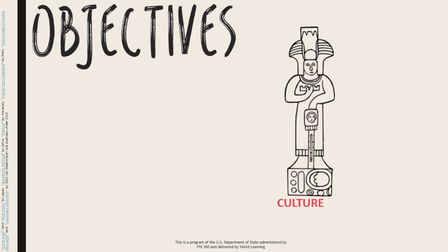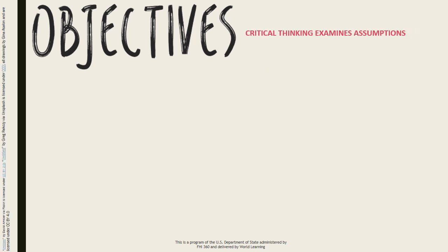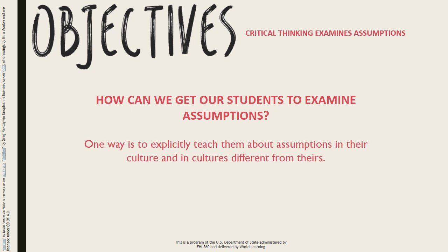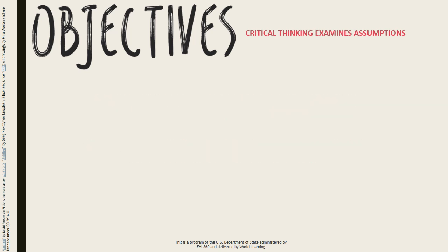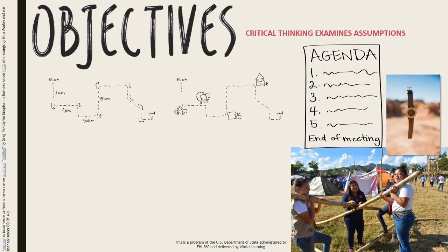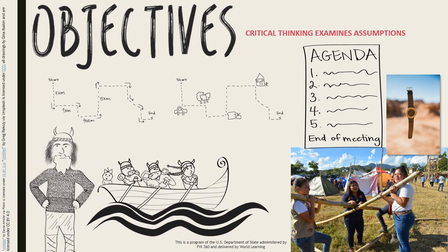Let's review some of the descriptions of critical thinking that we saw in Unit 2 and consider the kinds of activities that can support them. Number one: critical thinking examines assumptions. How can we get our students to examine assumptions? One way is to explicitly teach them about assumptions that exist in their culture and in cultures different from theirs — by explaining and exploring contrasts between high and low context cultures, monochronic and polychronic cultures, or individualist and collectivist cultures.